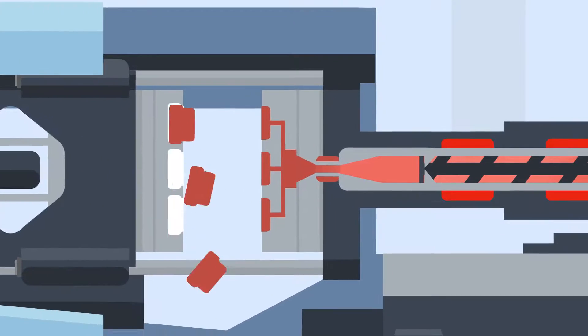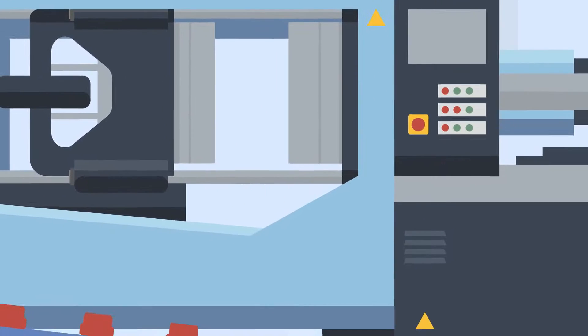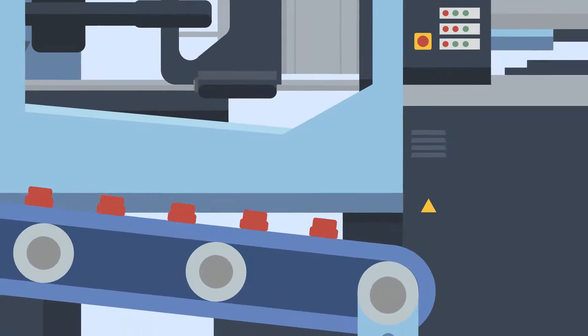Once the set cooling time has passed, the mould opens and ejector pins or plates push the new parts out of the tool. These then fall onto a conveyor belt ready to be finished and packed.